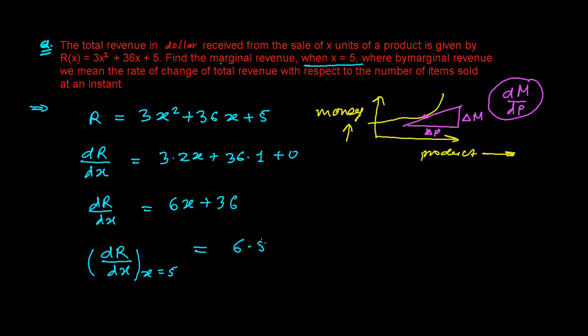So that is going to be 6 times 5 plus 36. So it's going to be 6 times 5, that is 30, and this is 36. So it's going to be 66 dollar.